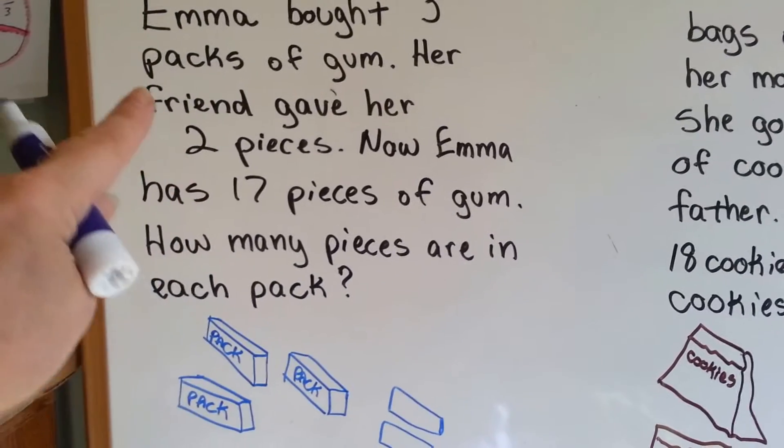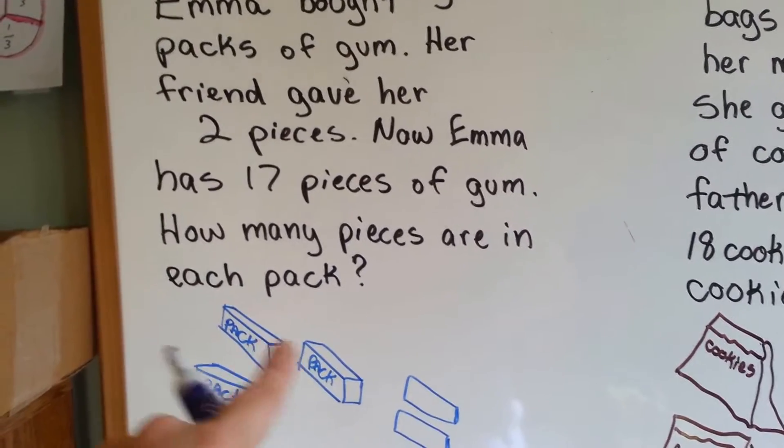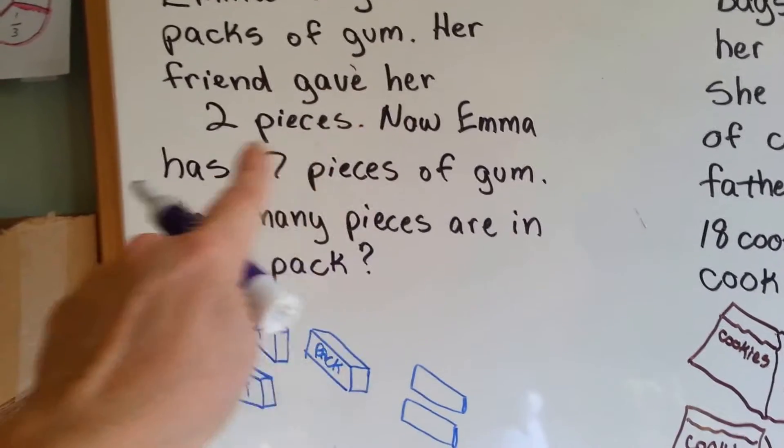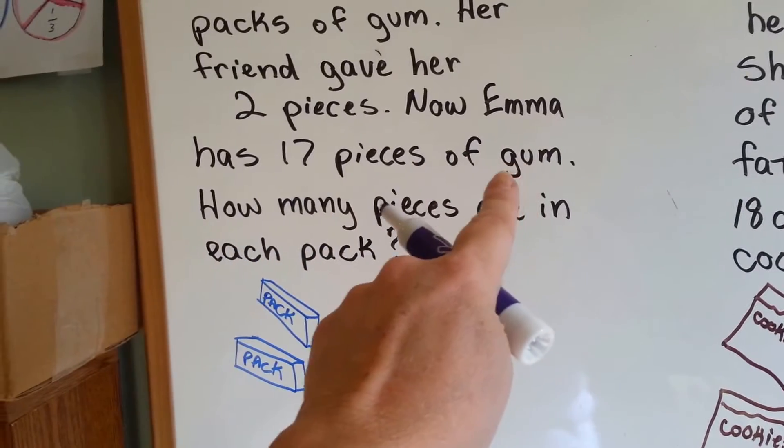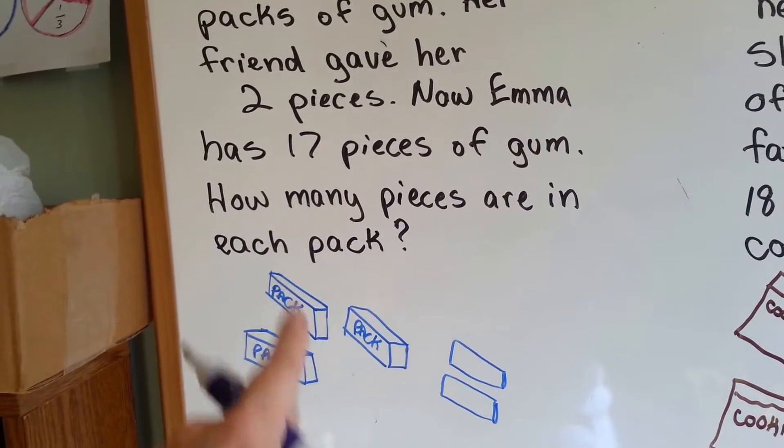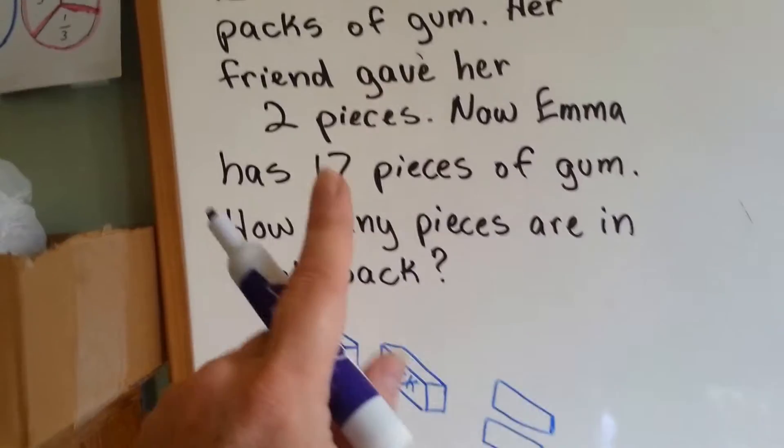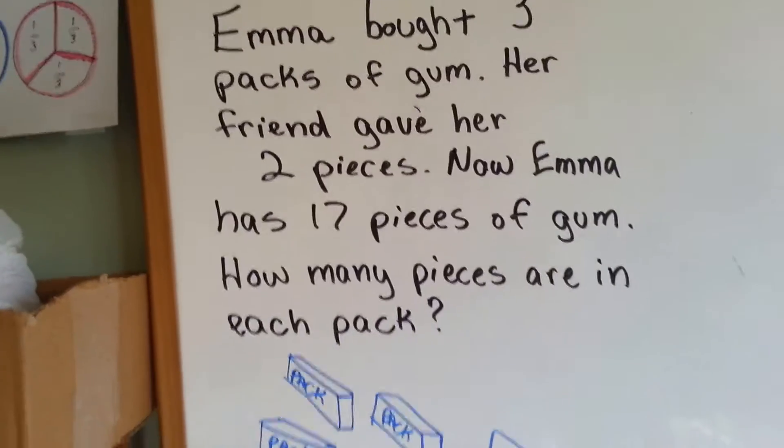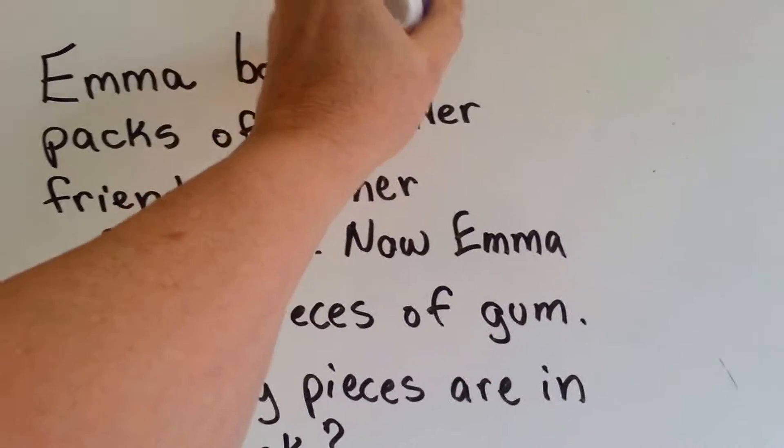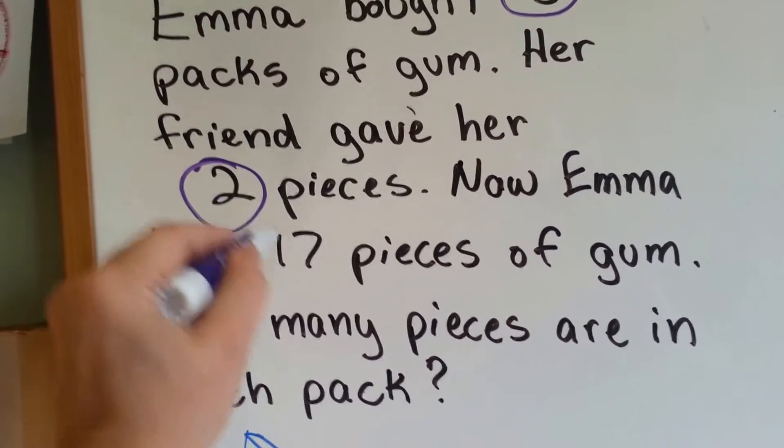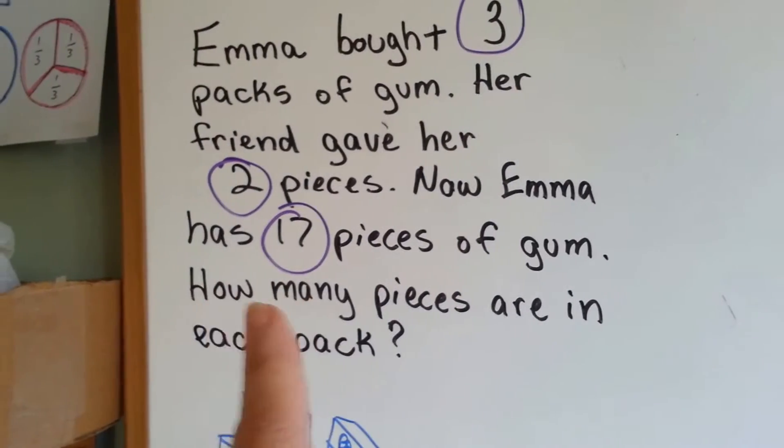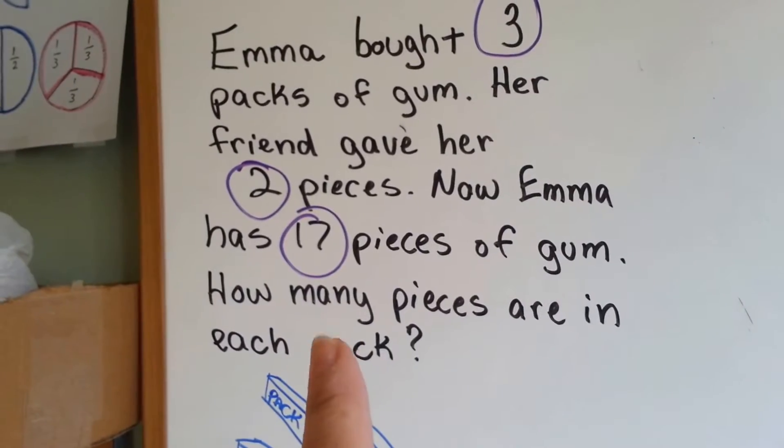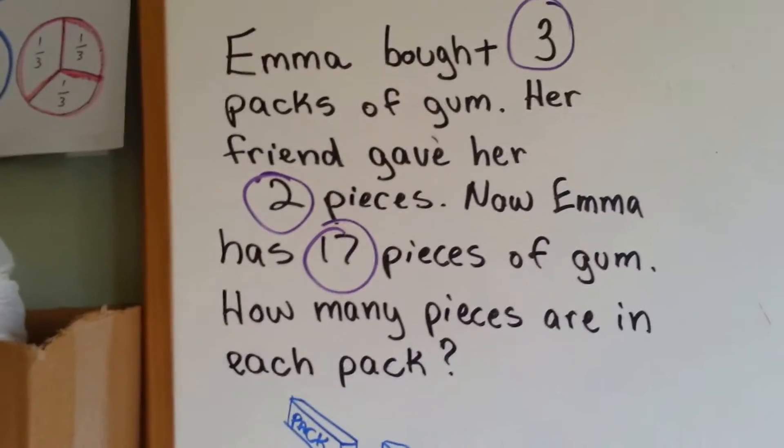Emma bought three packs of gum. Her friend gave her two pieces. Now Emma has 17 pieces of gum. How many pieces are in each pack? How would we solve this? Well, the first thing we need to do is identify the important numbers. Sometimes there's numbers in a word problem that aren't important, and they're just there to trick you. In this case, though, each one of these is important.